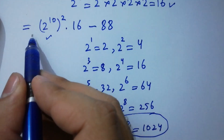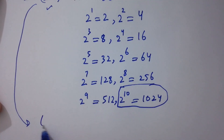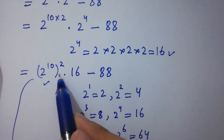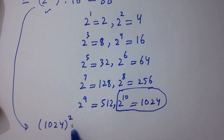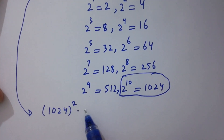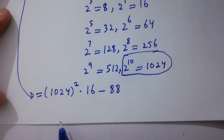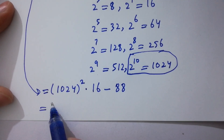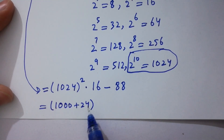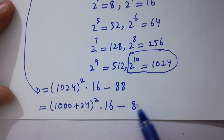So the expression becomes 1024 to the whole power 2, times 16, minus 88. We can write 1024 as 1000 plus 24, so we have (1000 + 24)² times 16, minus 88.